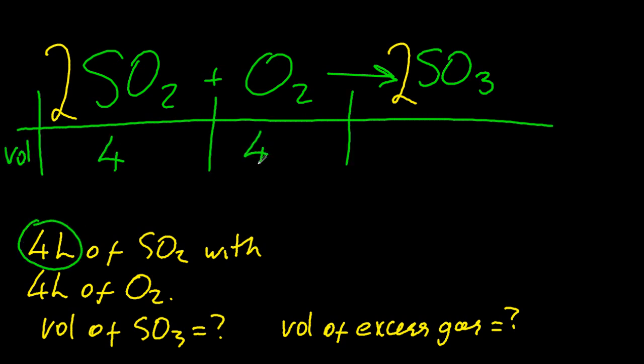So I put the numbers from the question in, and just to work out which is excess and which is limiting, the lowest is limiting. Okay, so the sulphur dioxide is limiting, and so the four litres of oxygen, that's excess.